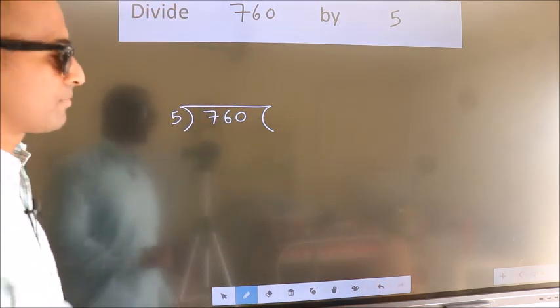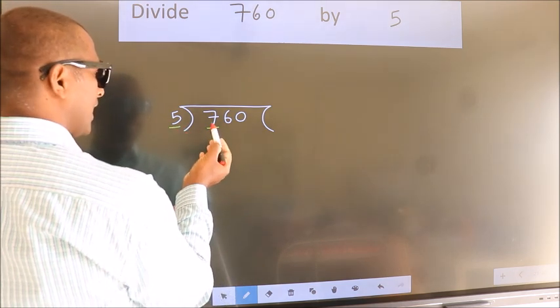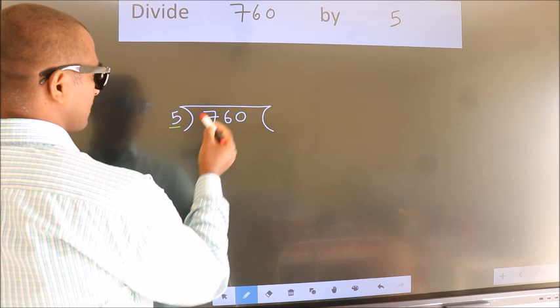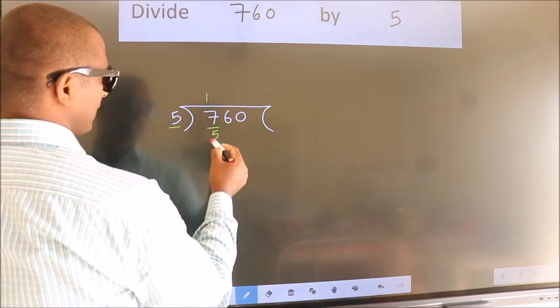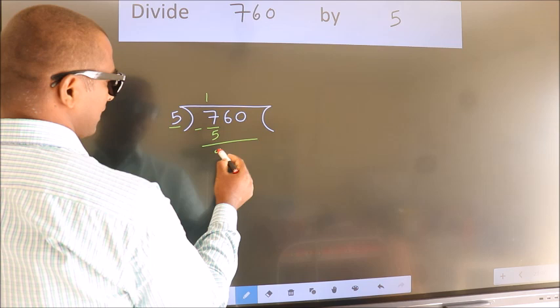Next. Here we have 7, here 5. A number close to 7 in the 5 table is 5 once 5. Now we should subtract. We get 2.